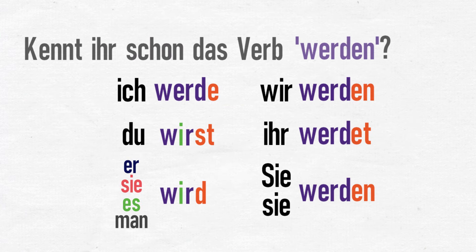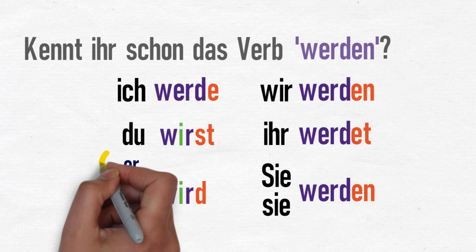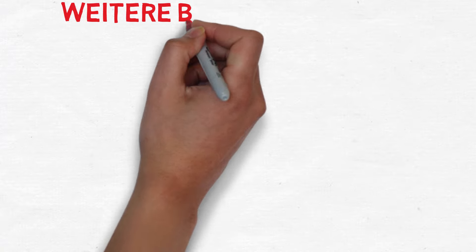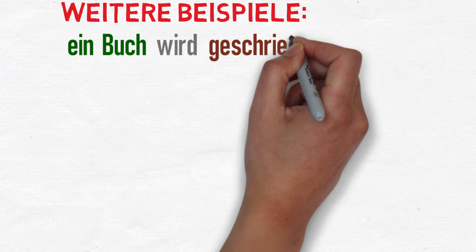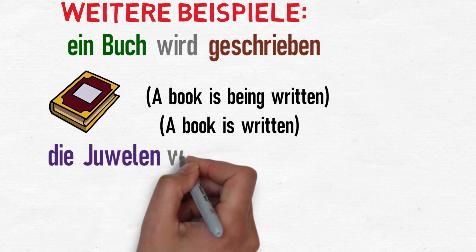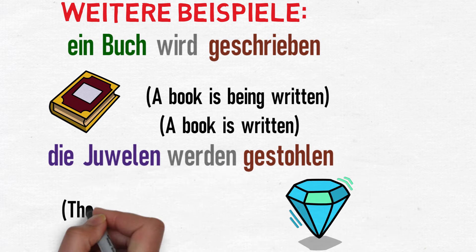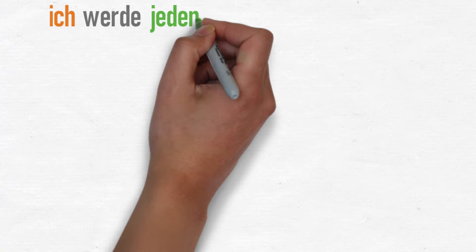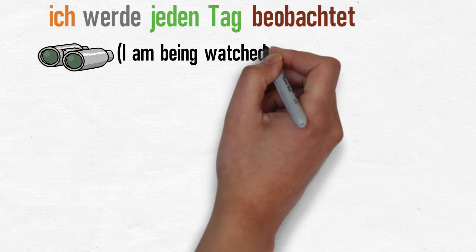It's likely that most passive sentences will either use a third-person singular — he, she, it — or third-person plural — they — subject. And so most present tense passive sentences will be made with either 'wird' or 'werden,' and a past participle. Here are some more examples of passive voice sentences in the present tense: 'Ein Buch wird geschrieben' — a book is being written, or a book is written. 'Die Juwelen werden gestohlen' — the jewels are being stolen, or the jewels are stolen. 'Ich werde jeden Tag beobachtet' — I am being watched every day.